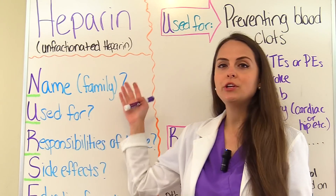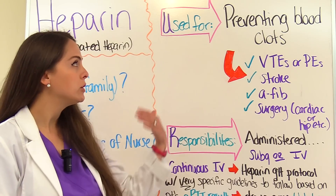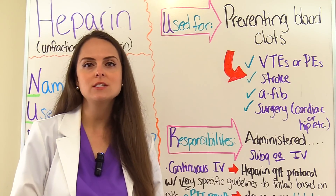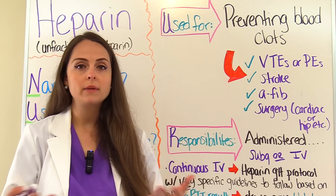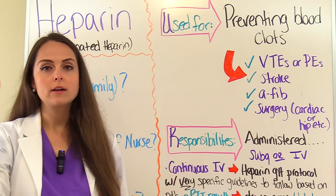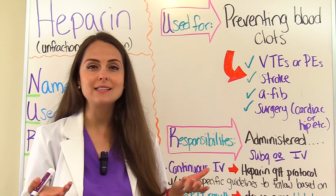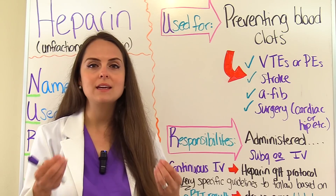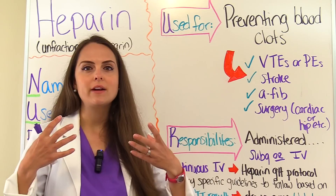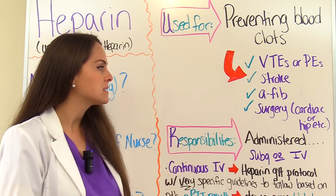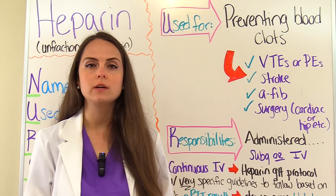Now let's ask ourselves what heparin is used for. Heparin is an anticoagulant, so it's going to be used to prevent and treat blood clots. Conditions it can treat include VTEs, pulmonary embolism, and stroke prevention. For atrial fibrillation, the heart isn't emptying like it should, blood is pooling from those erratic impulses, and a clot can form — we want to prevent a clot being shot out of the heart and leading to a stroke. It's also used in certain surgeries like cardiac surgery or orthopedic surgery such as hip surgery, where there's an increased risk of clot development.